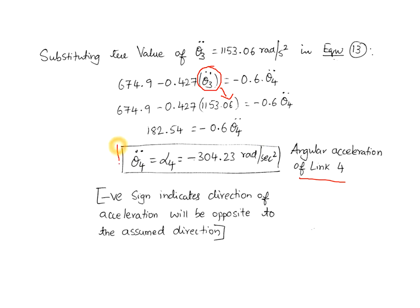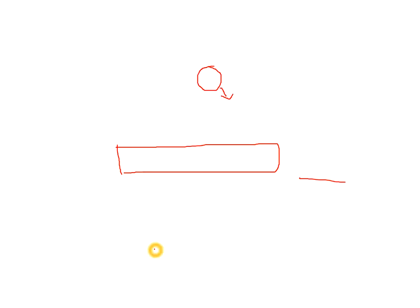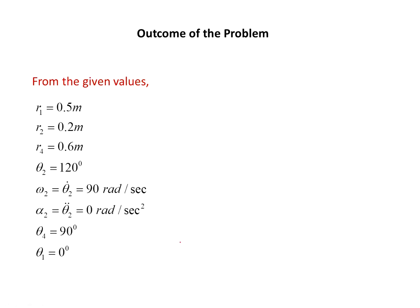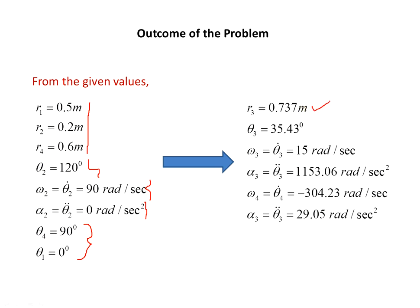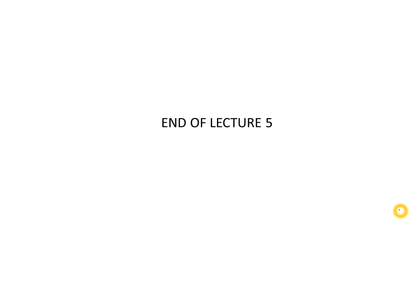To summarize: the given values were R1, R2, R4, theta2, omega2 (alpha2 assumed 0), theta4, and theta1. Applying the complex algebra procedure, we found R3, theta3, omega3, omega4, alpha3, and alpha4 — all six unknowns. This ends lecture number 5. In the subsequent module 3 part 2, we will deal with kinematic synthesis, the Freudenstein equations, and function generation. Thank you.